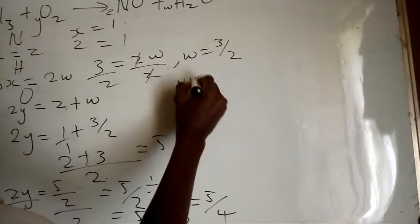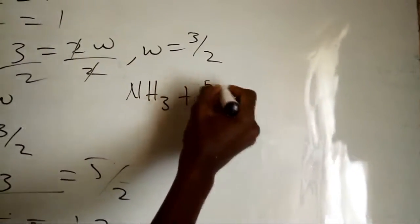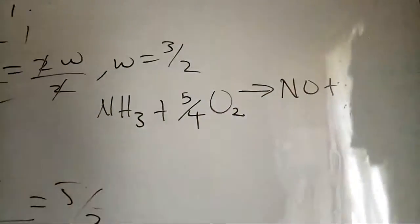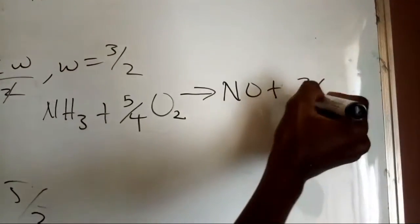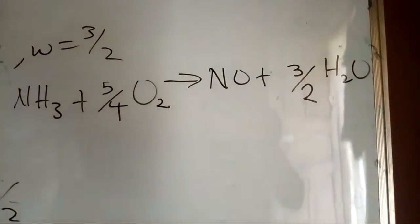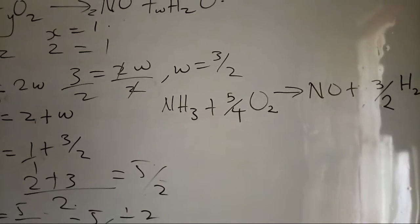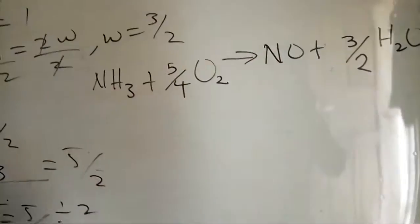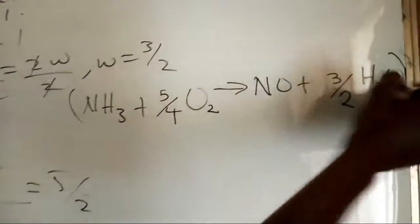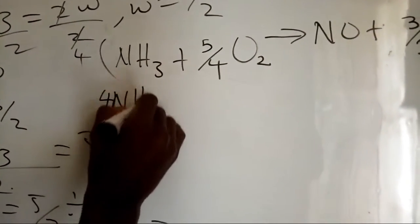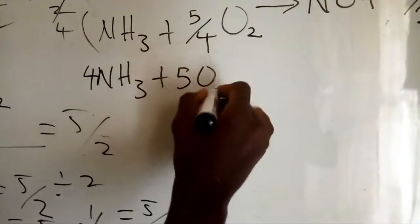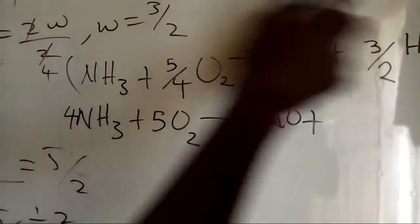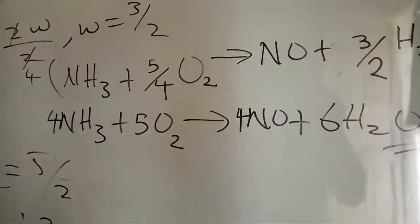Rewriting the equation: NH3 plus 5/4 O2 gives NO plus 3/2 H2O. Since the moles are not whole numbers, we multiply by the LCM of the fractions. The LCM of 4 and 2 is four. Multiplying through by four: 4 NH3 plus 5 O2 gives 4 NO plus 6 H2O. The equation is balanced.